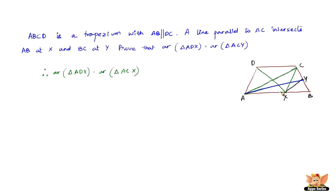Also, triangle ACX and triangle ACY are on the same base AC and also between the same parallels AC and XY — so both triangles lie between these two lines and share the same base AC. Therefore, area of triangle ACX equals area of triangle ACY.